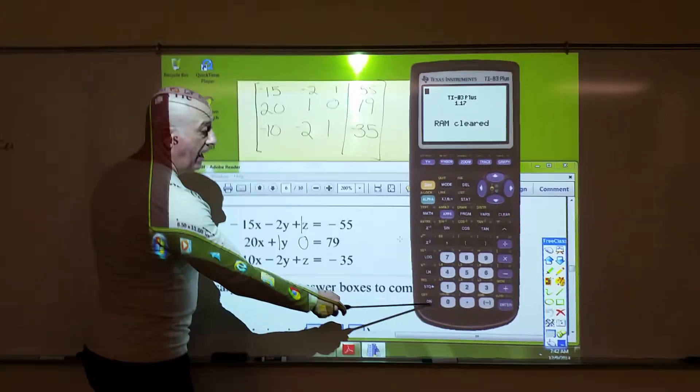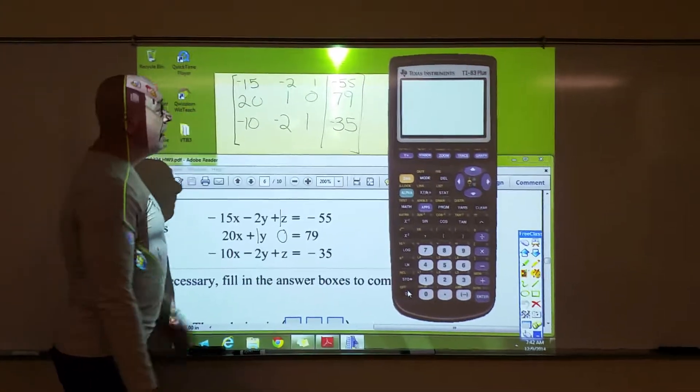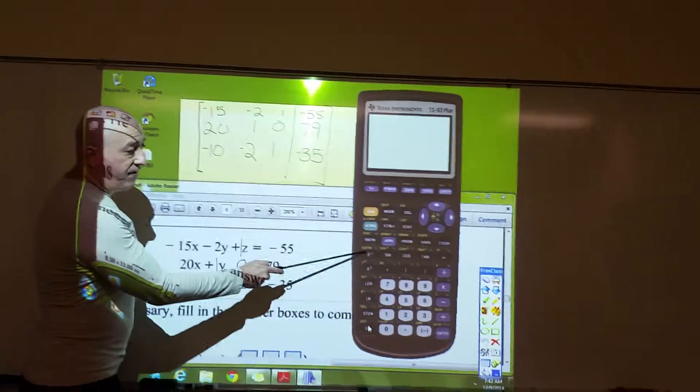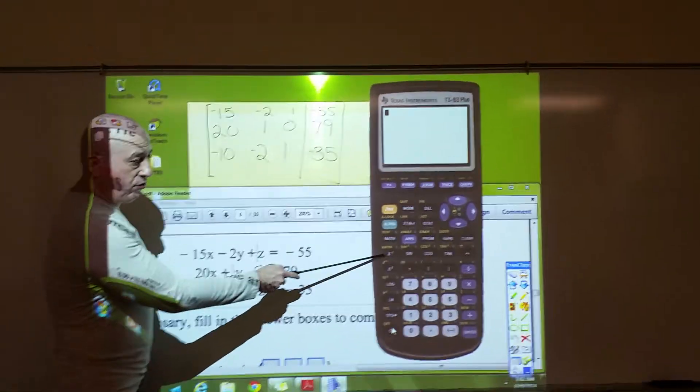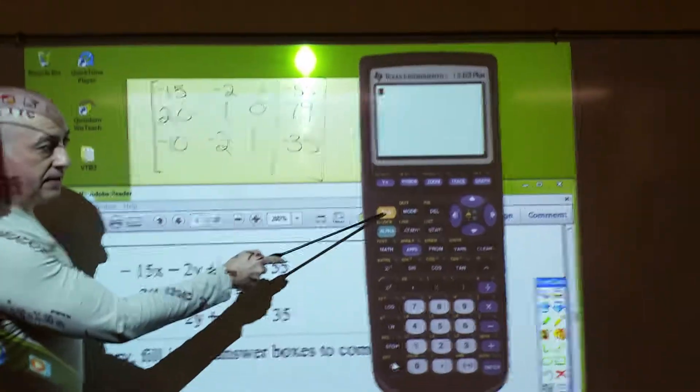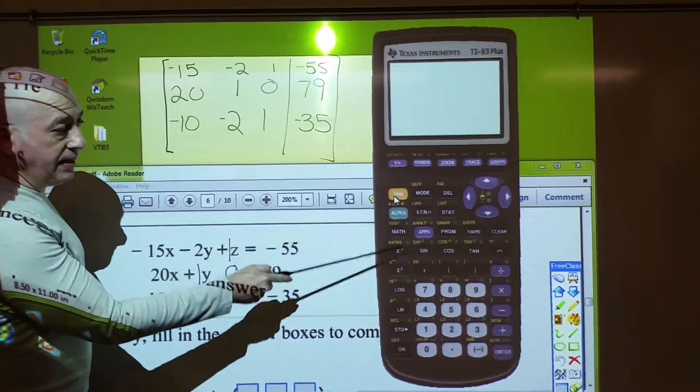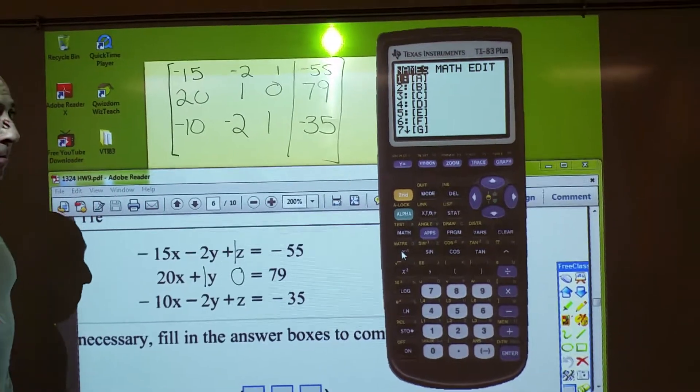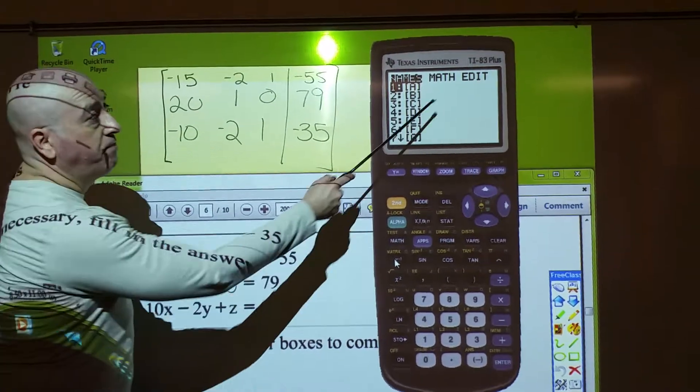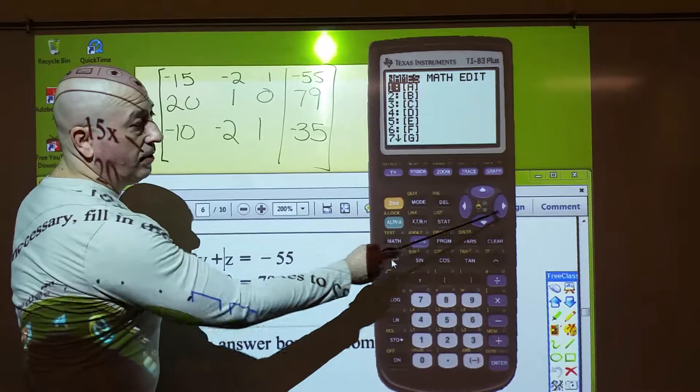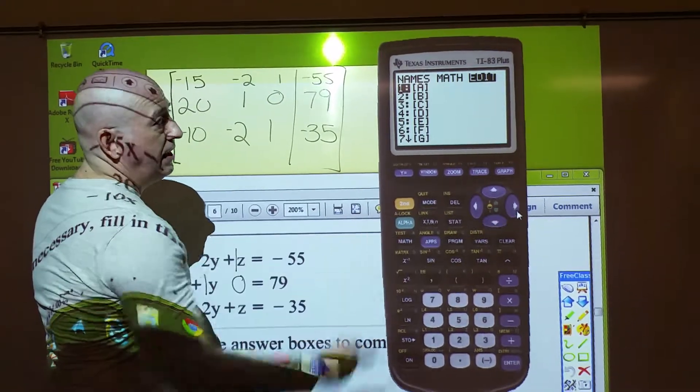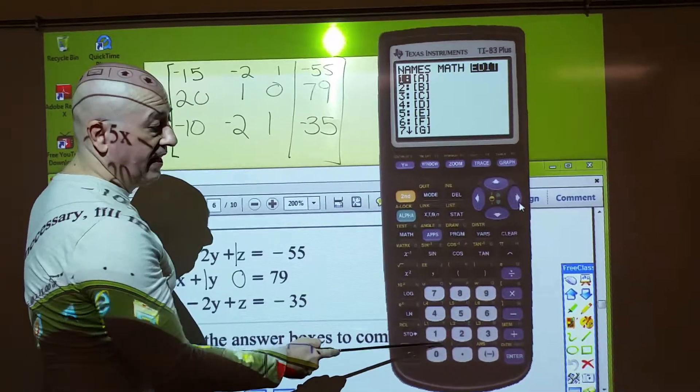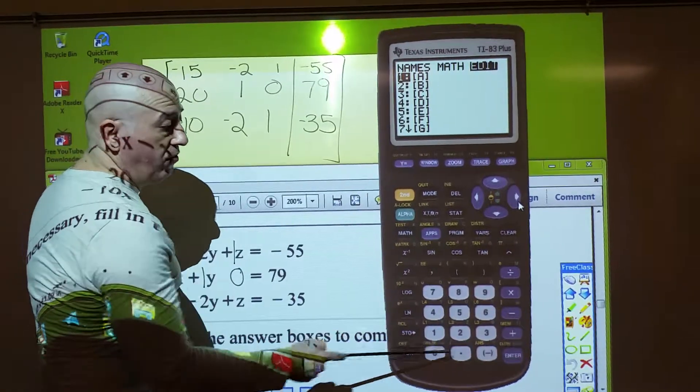So, I'm going to turn on my calculator, and to enter this matrix, I'm going to access the matrix feature. To do that, I'll say second matrix, and I need to input a matrix. To do that, we're going to edit it. So, I'm going to go over and say edit. Now, I'll just use this first one, matrix A. So, either hit one or enter.